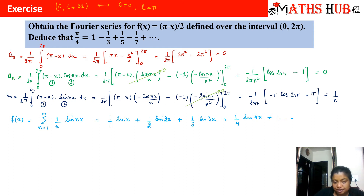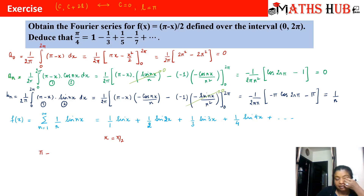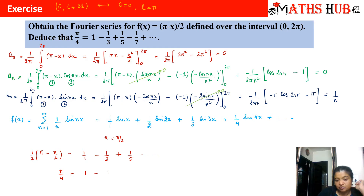If we substitute x = π/2, the first term becomes sin(π/2) = 1, the next term sin(π) = 0, then sin(3π/2) = -1, giving alternating plus and minus signs. On the left hand side, f(π/2) = (π - π/2)/2 = (π/2)/2 = π/4. On the right side we get 1 - 1/3 + 1/5 - ... So we deduce that π/4 = 1 - 1/3 + 1/5 - ... This is how to do the deduction: substitute a suitable value of x into the Fourier series.